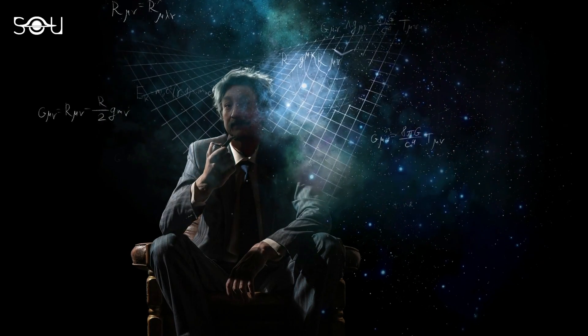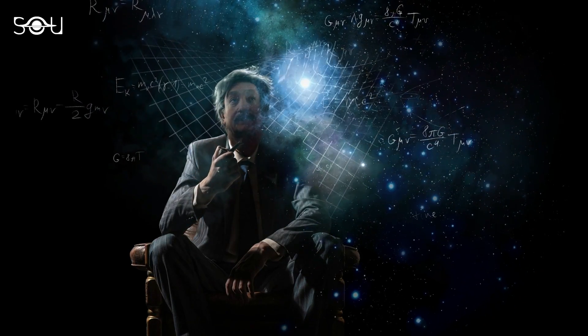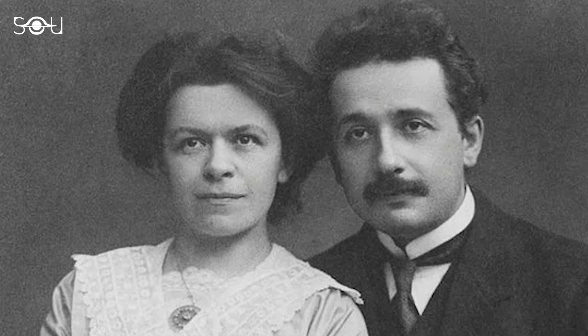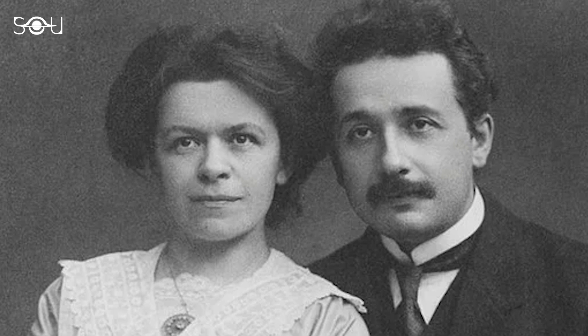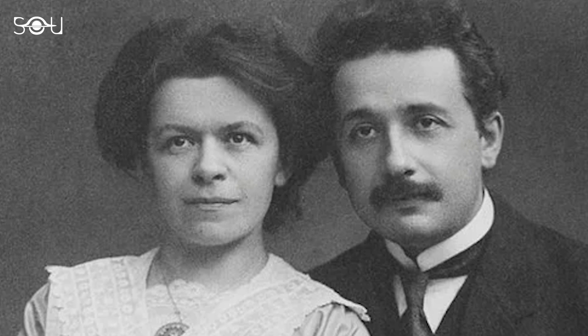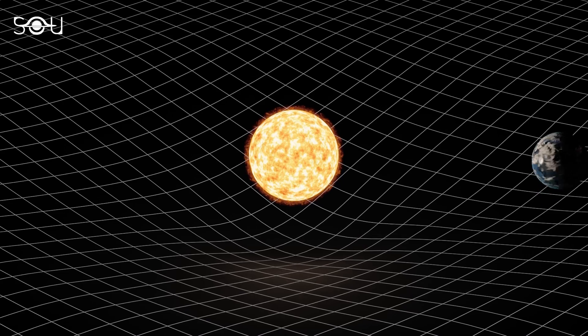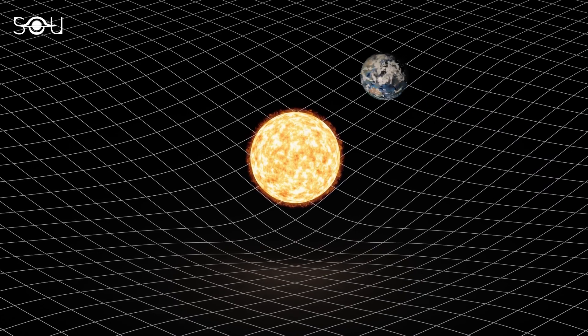Although Albert Einstein is regarded as one of the most brilliant scientists to walk the planet, he was a human just like the rest of us and even made some mistakes. Here are five of the biggest errors made by Albert Einstein in his scientific life.